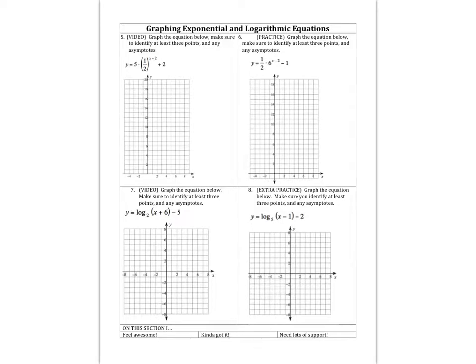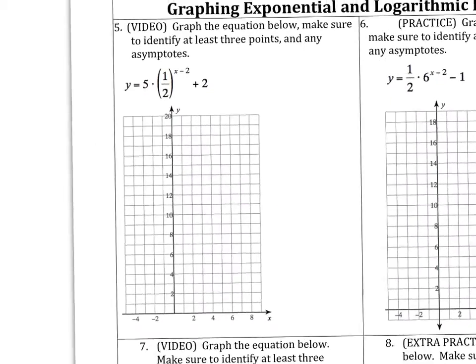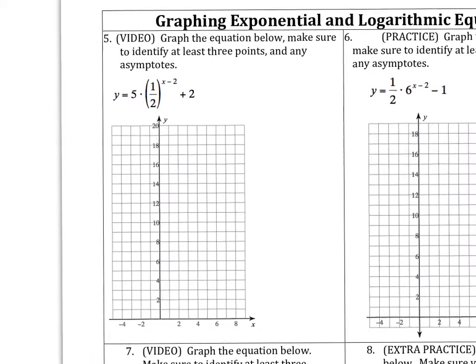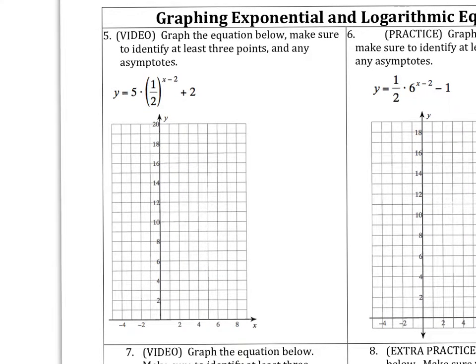Next up, we've got to graph some exponential and logarithmic functions. We're going to look at problem 5 first. And dealing with an exponential function, the first thing I notice is that we've got an x in the exponent. And I've got a plus 2 at the end. That means my horizontal asymptote, because it's got a y equals, is going to be at a height of 2. That's the first thing I'm going to graph.